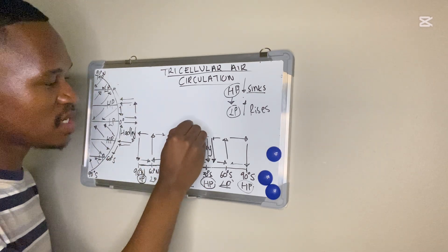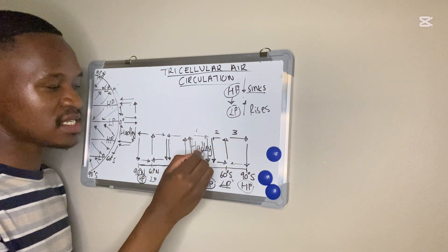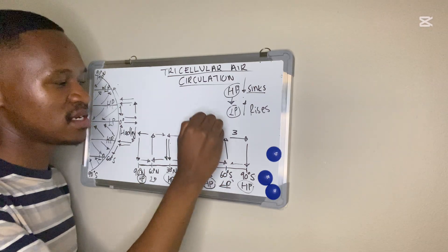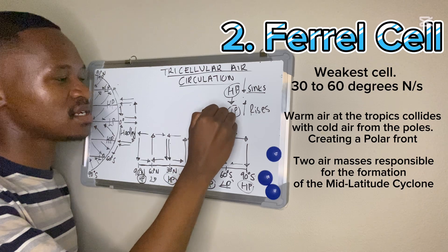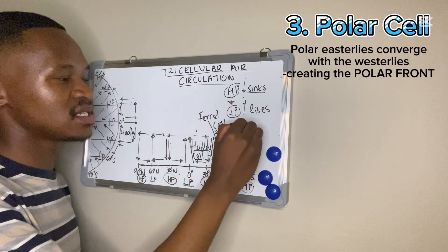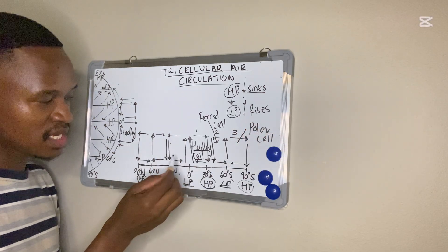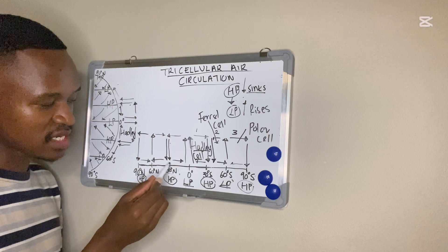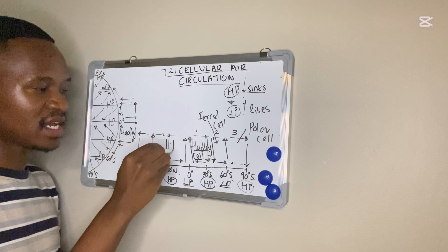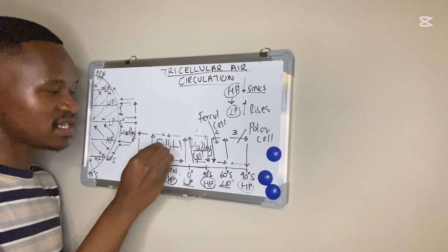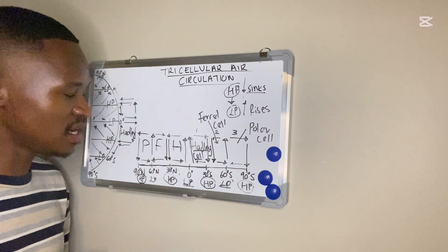We now have three cells which have formed. Cell one is the Hadley cell. Cell two is the Ferrel cell. Cell three is the polar cell. The same applies for the southern hemisphere: the cell between zero and 30 degrees is the Hadley cell, the next one is the Ferrel cell, and the last one is the polar cell.